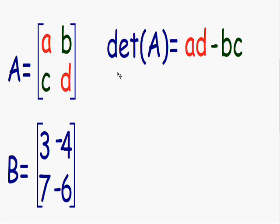And the formula is the determinant of this matrix A is equal to A times D minus B times C. And notice how A times D is the red diagonal of this matrix and B times C is the green diagonal of the matrix.